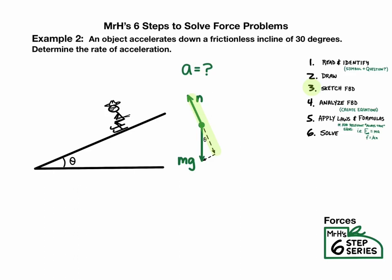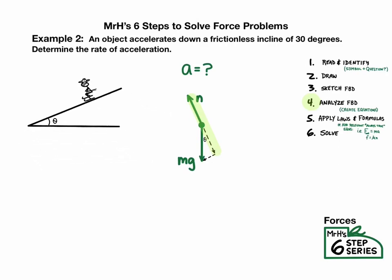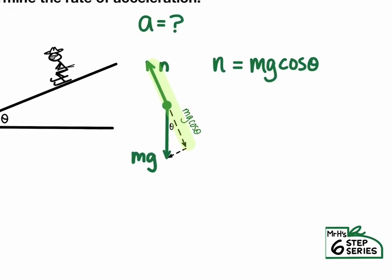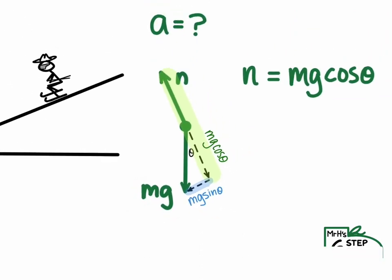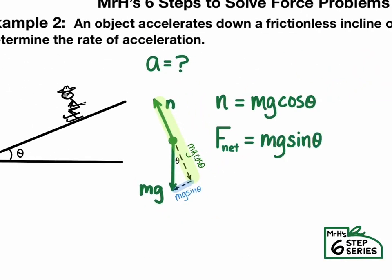And this brings us to step four. In step four, we analyze the free body diagram to create equations. Well, if normal force is equal to the component of gravity through the ramp, then I can make the equation normal equals mg cosine theta. From here, we can use vector summation to find there's a leftover net force component down the ramp, mg sine theta. So we can say F net equals mg sine theta.